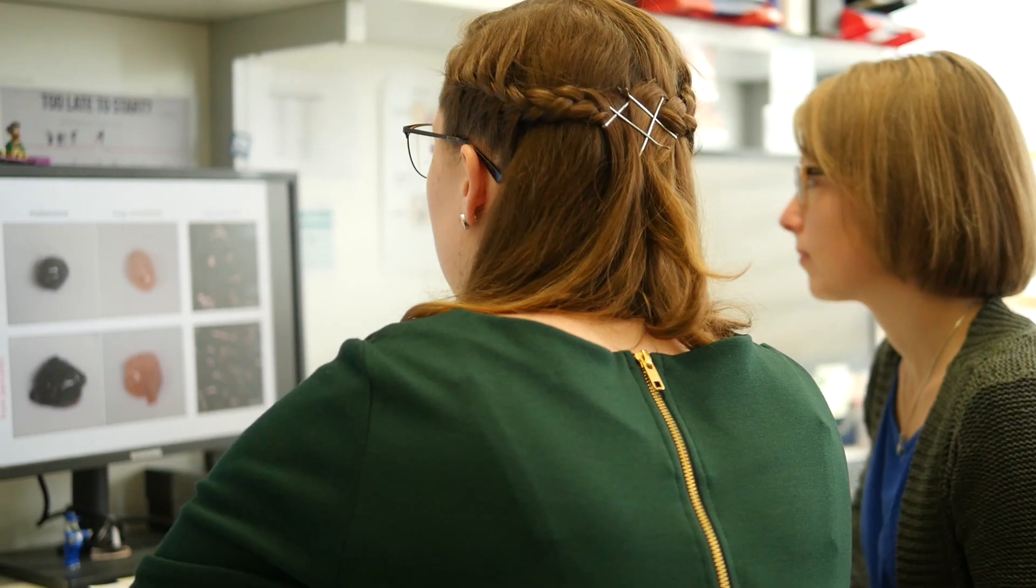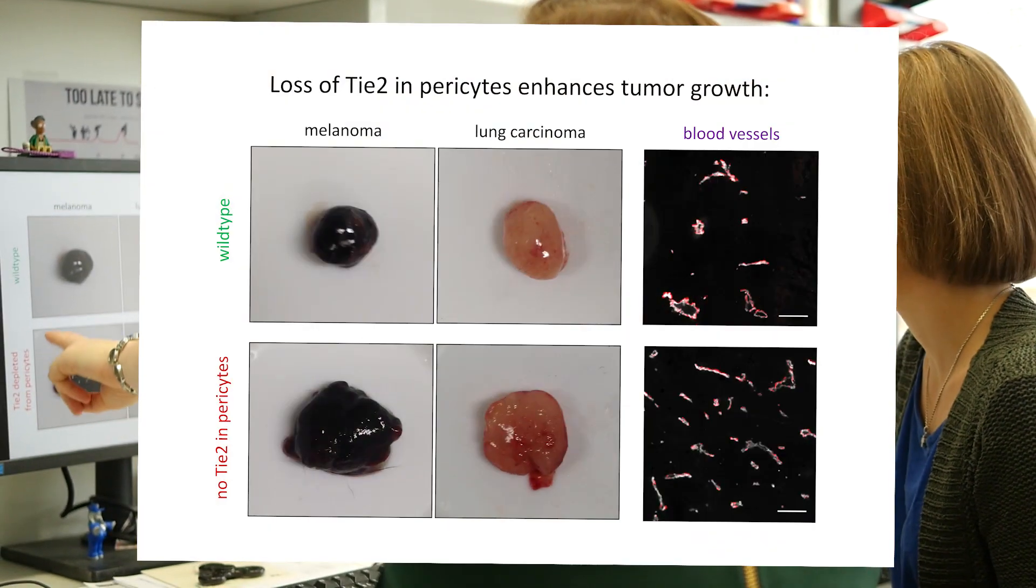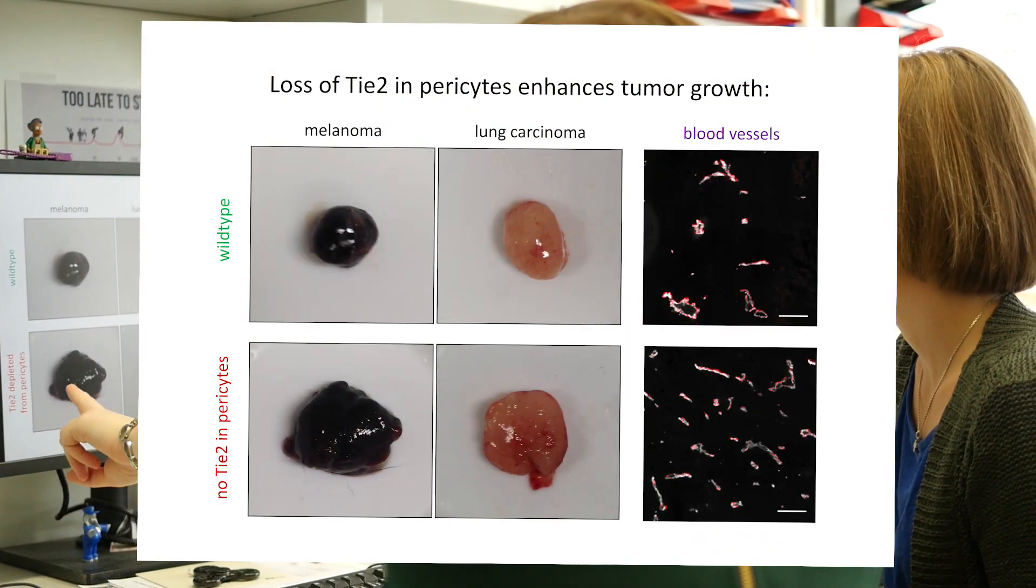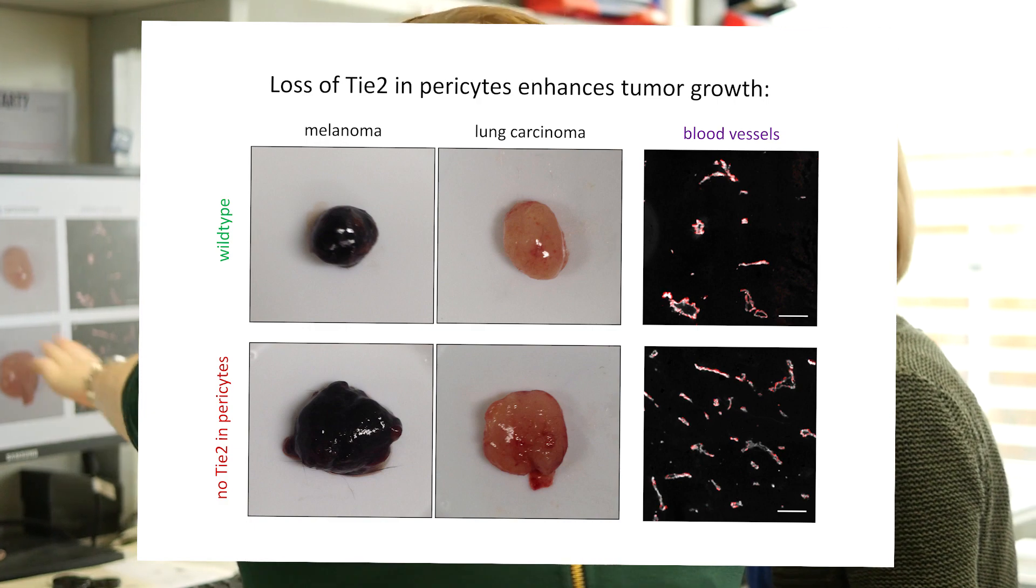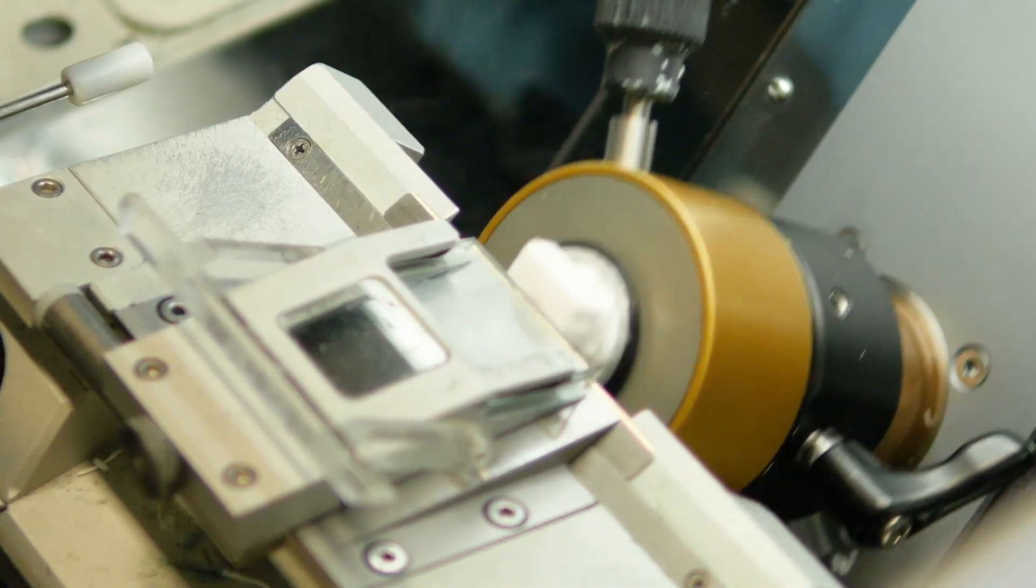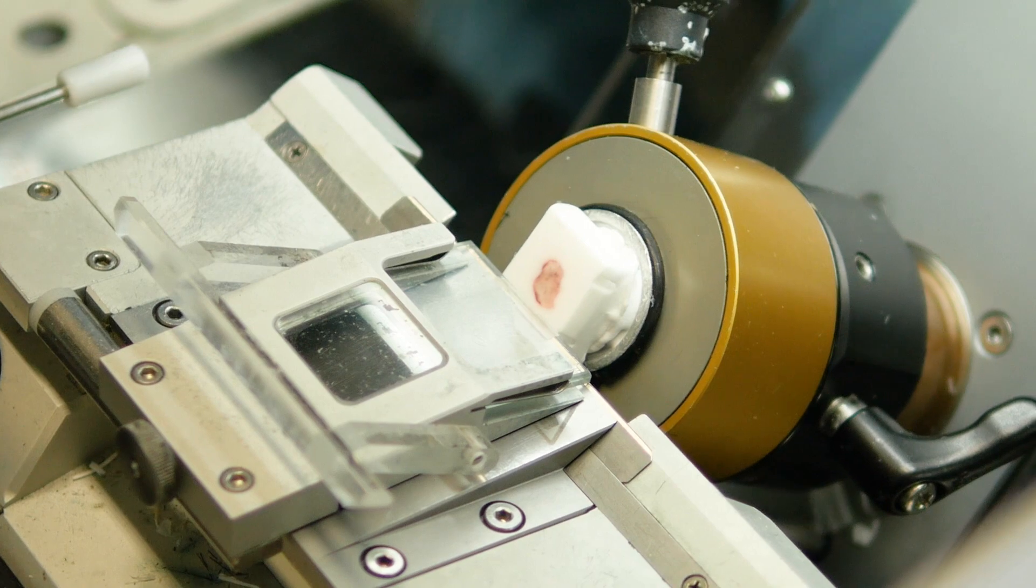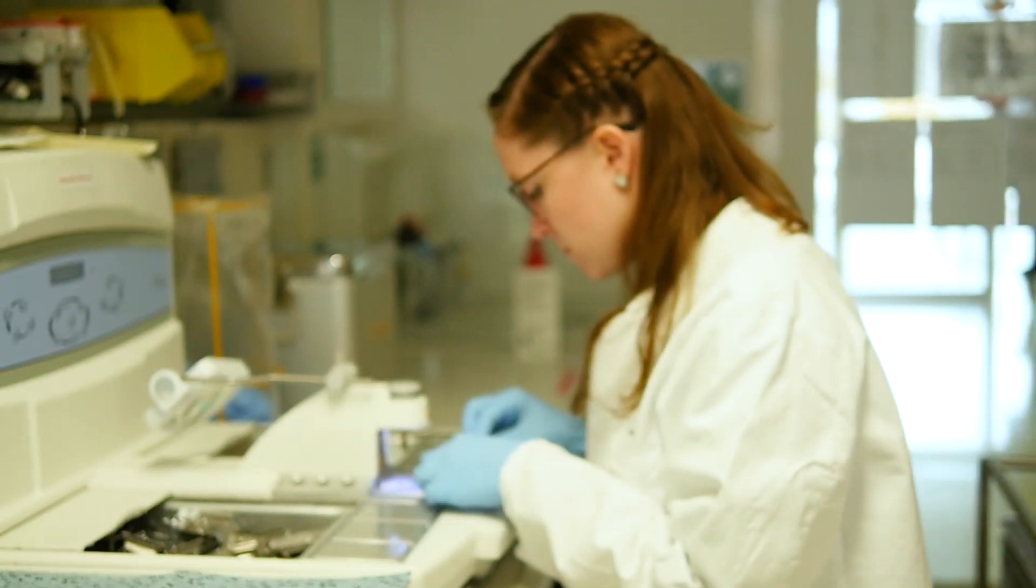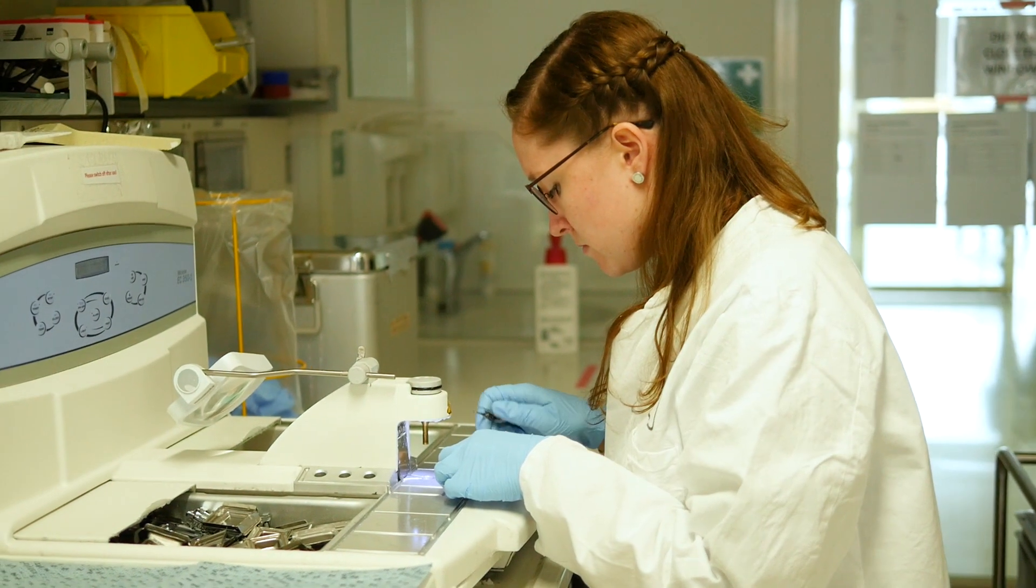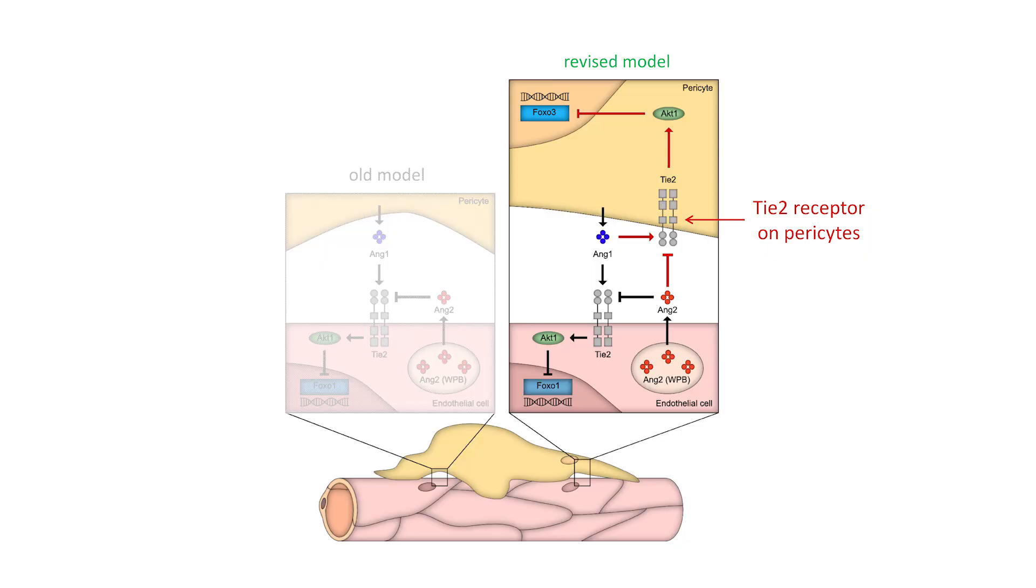Interestingly, tumors with pericytes that do not have T2 receptor grew much faster and displayed significantly more blood vessels. We have thereby established that T2 in pericytes acts as a kind of brake for vessel growth and thus for cancer as well, which was a very exciting finding for us. This new mechanism of vessel stabilization by pericyte T2 substantially adds to our current knowledge and the development of new treatment strategies.